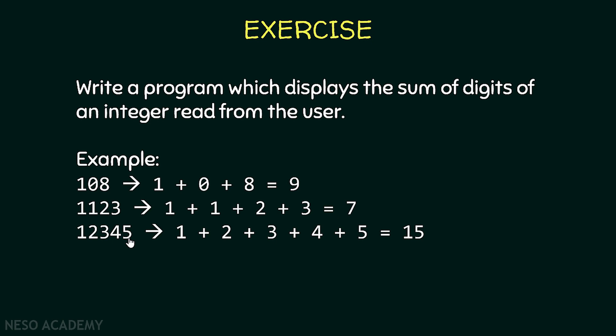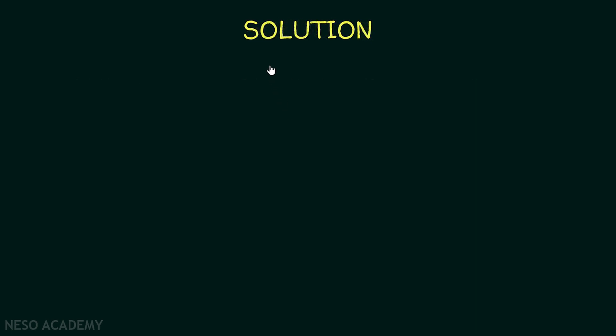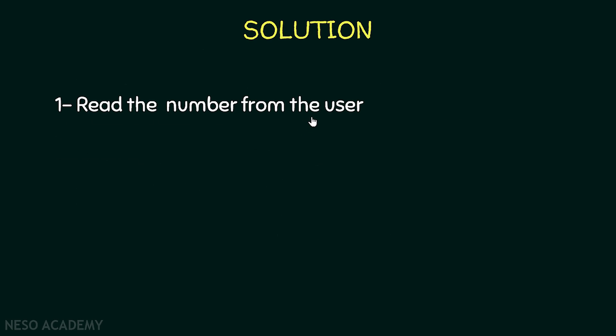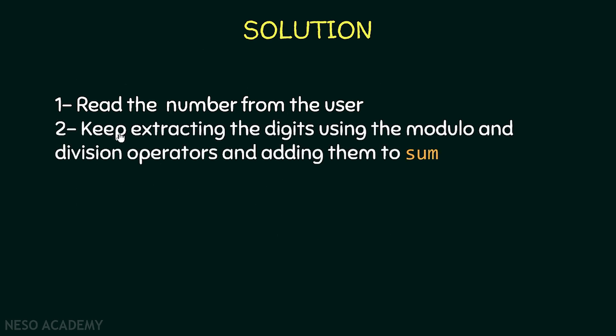I want you to pause the video and try to solve this exercise. Remember to use the modulo operator and the division operator. Now let's see our solution. First of all, we will read the number from the user, and after that we will keep extracting the digits using the modulo and division operators and adding them to a variable sum. When we finish extracting all the digits, we will display the sum.